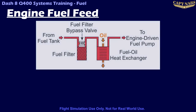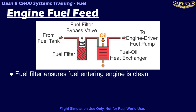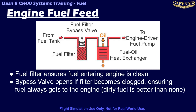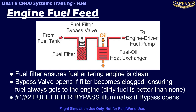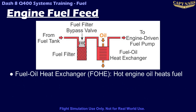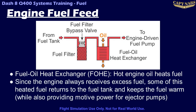Prior to entering the engine-driven fuel pump, the fuel passes through a filter and then a fuel oil heat exchanger, or FOHE. The filter has a bypass switch which opens if the filter is clogged, allowing fuel to continue to flow. If the filter is approaching or reaches the bypass condition, the number one or number two fuel filter bypass caution light will illuminate. The fuel oil heat exchanger helps to cool engine oil while also helping to reheat the fuel. The engine is always supplied with more fuel than is needed; the excess is then routed back to the fuel tank as motive flow for the ejector pumps. This returning fuel serves to warm the fuel in the tanks, ensuring it is kept well above the freezing point at cruising altitudes.